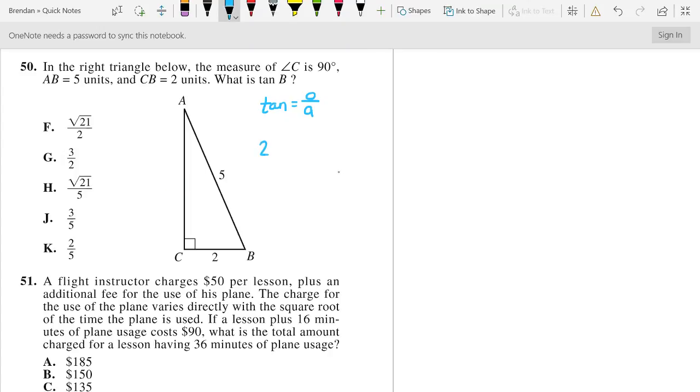So, it would be 2 squared plus, I'll call it just x squared for now, equals 5 squared. And x squared would end up equaling 21, and x equals the square root of 21.